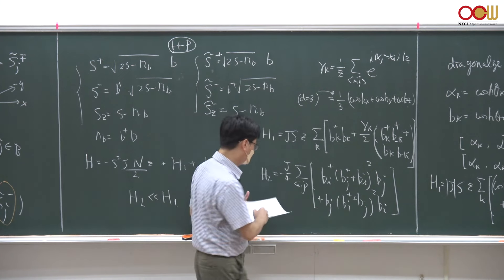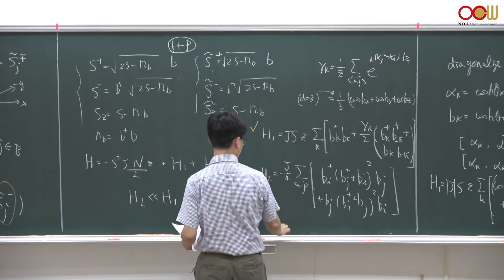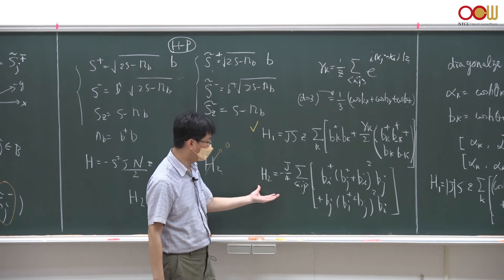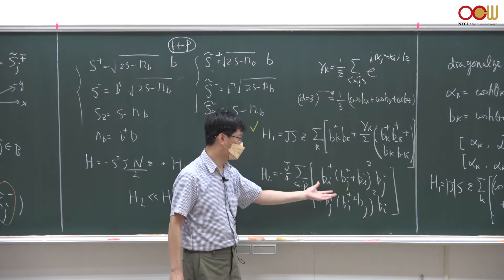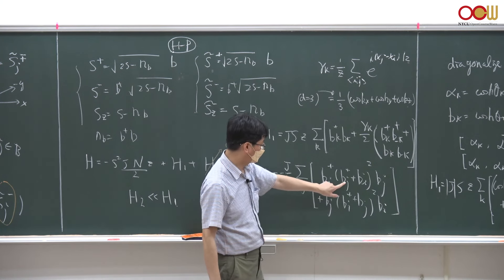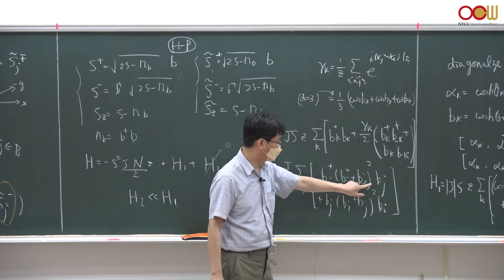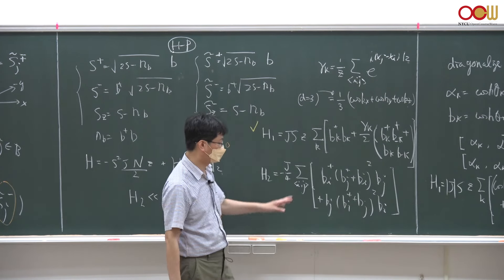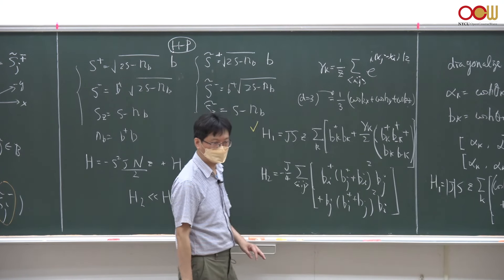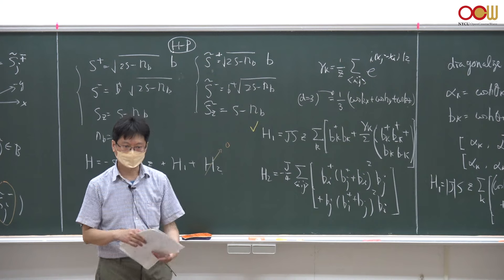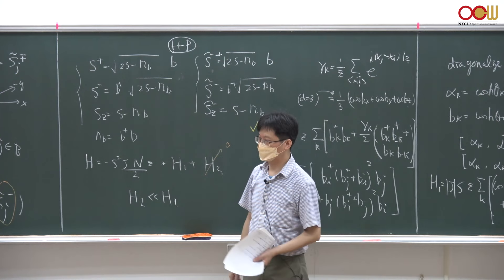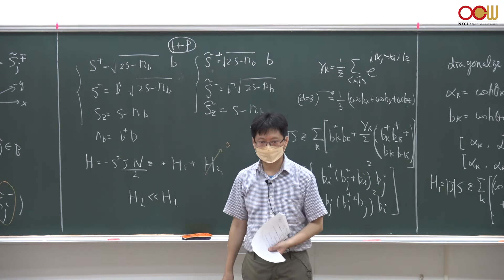For three dimensions, gamma_k equals one-third of cosine(k_x) + cosine(k_y) + cosine(k_z). H1 is the leading term. There is also a subleading term H2, which is quartic in boson operators — four boson operators in each term. At low temperatures, spin flips are rare, especially for three-dimensional spin systems, so the boson number is much smaller than the spin size.